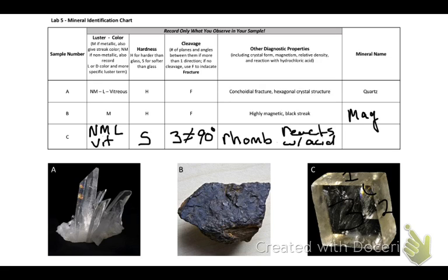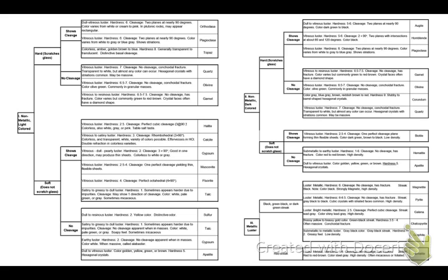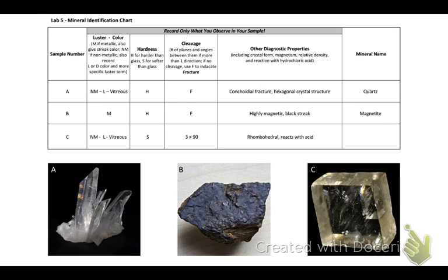Armed with this information, we go back to our flowchart. We'll go back to the non-metallic, light-colored bracket, but in this instance the mineral was softer than glass, so we'd use the soft bracket. Because it exhibited cleavage, we'd use the shows cleavage bracket. We see several possible choices, and only one mineral is known to have a rhombohedral crystal structure and to effervesce with hydrochloric acid, and that mineral is calcite. So, we'll go back to our Excel sheet and write calcite.